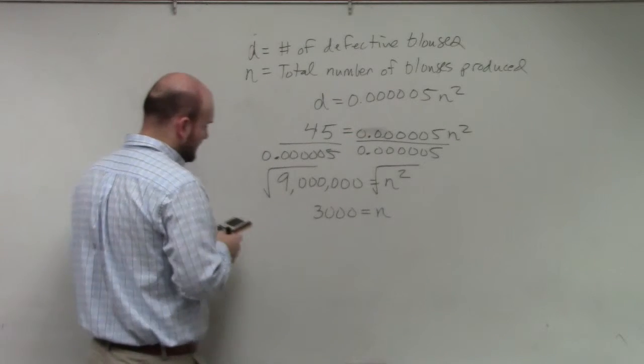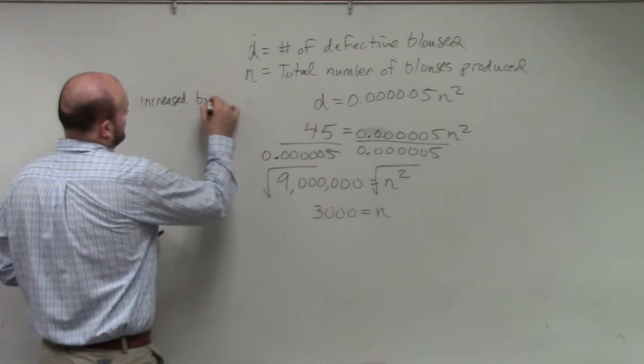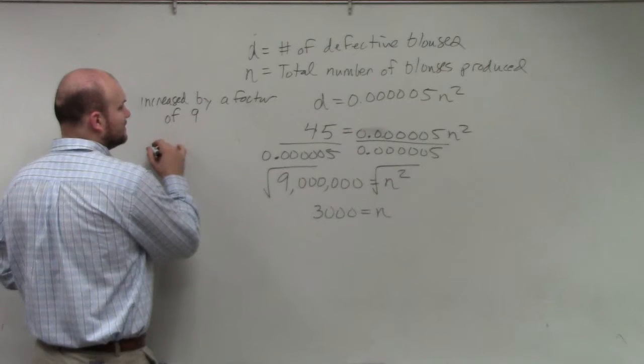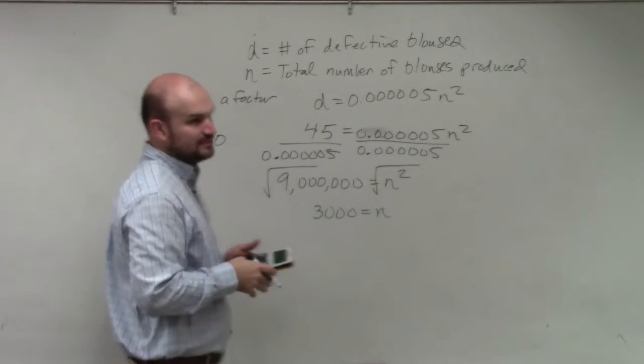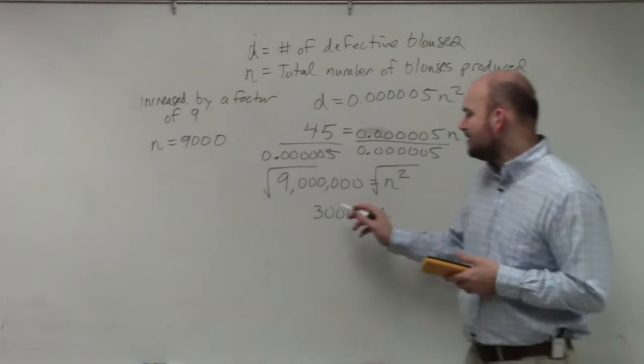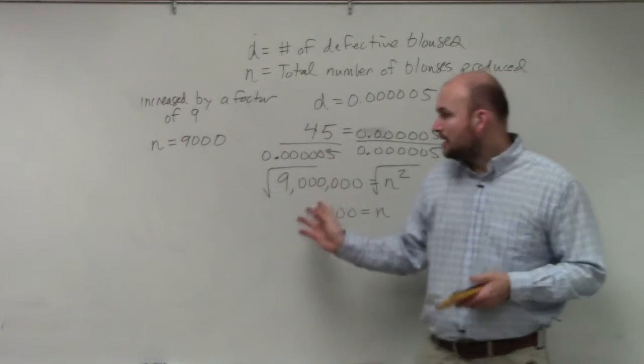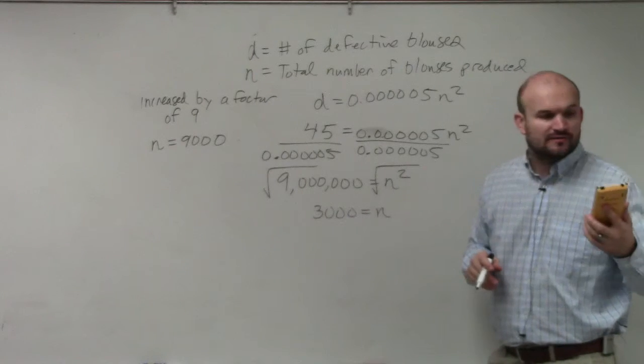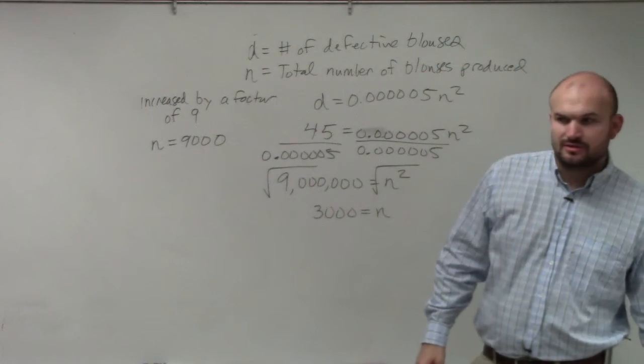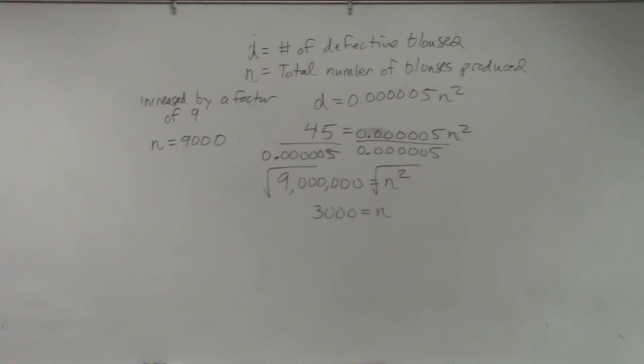So for letter B, if it's increased by a factor of 9, then n equals 9,000. So I did 9 times 45, which was 405, did the exact same process. So how is this increased? By a factor of 3, right? Well, you could say it's by a factor of 3 in this case. So if one is increased by a factor of 9, you could see that the n is being factored by 3, which relates to some geometry problems that we've talked about with the squaring.